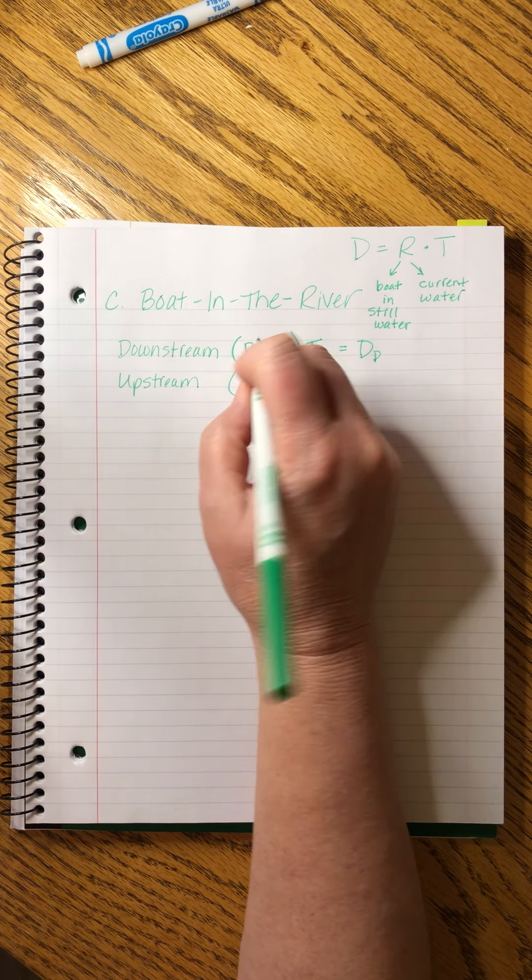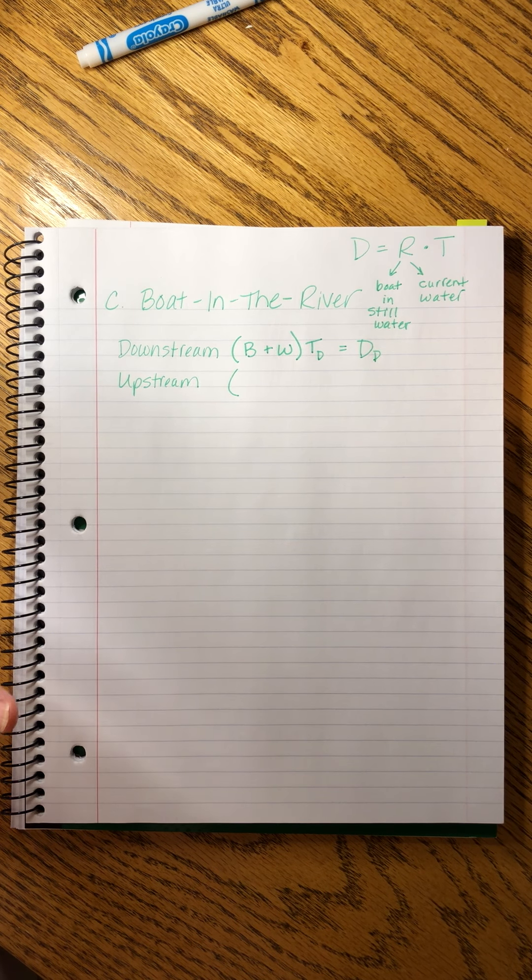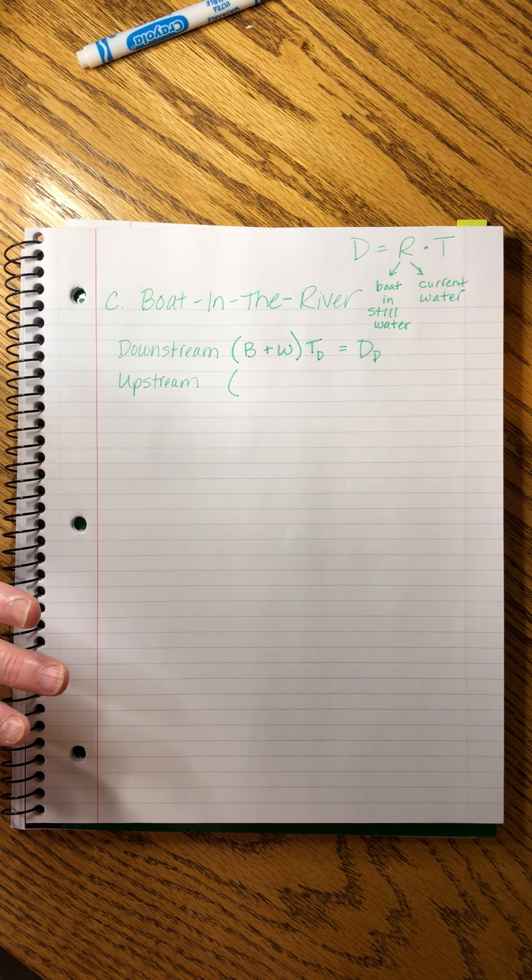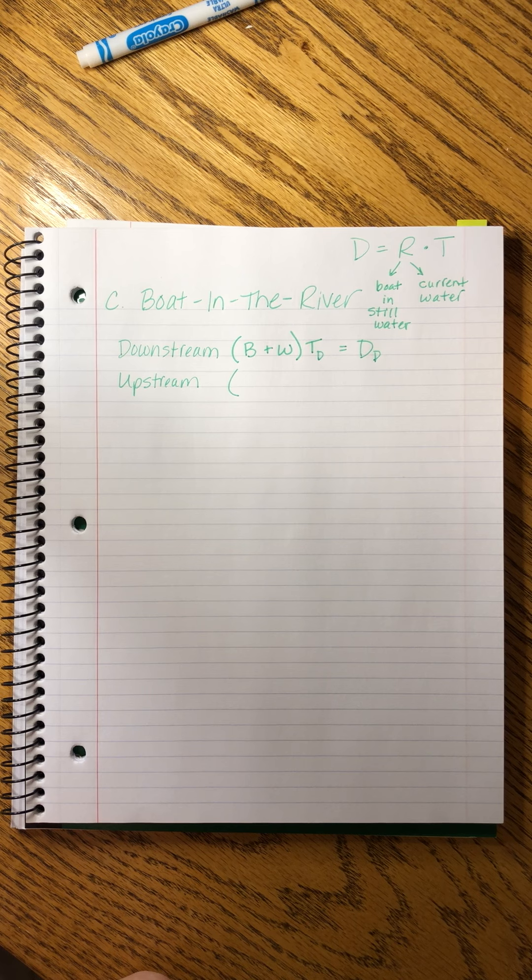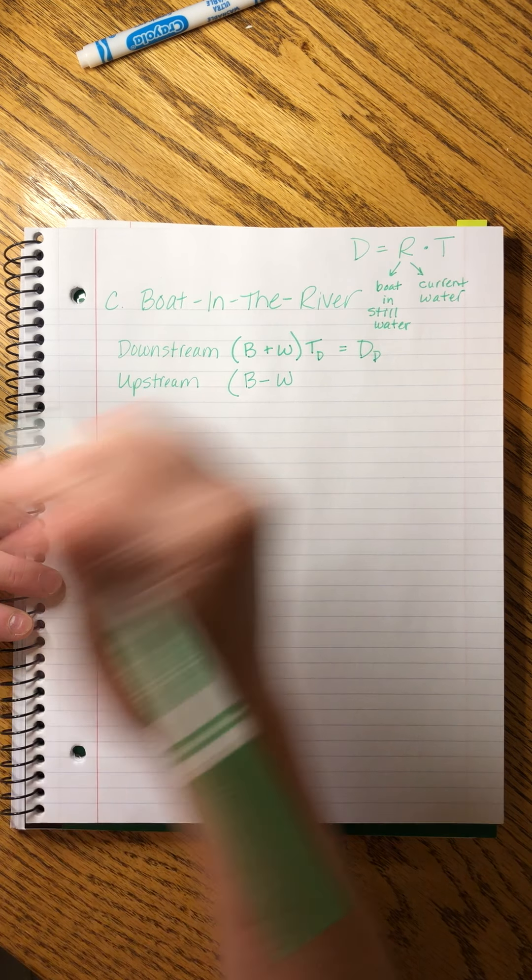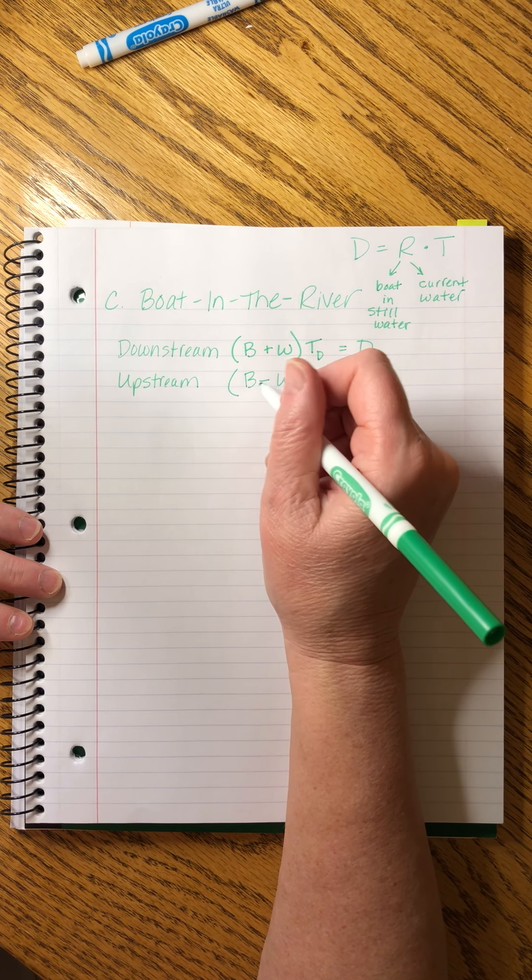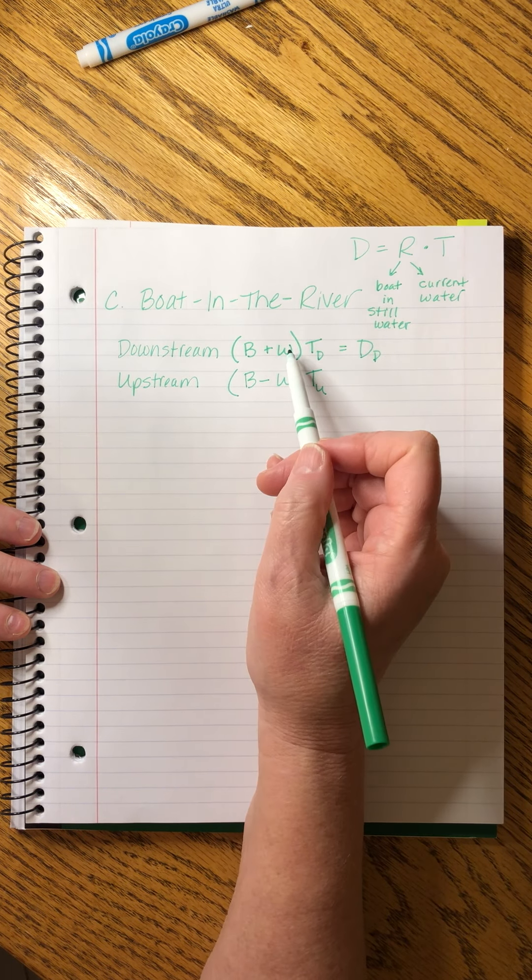So when we're going downstream, we're traveling with the speed of the current. So we add the rate of the boat plus the rate of the water and multiply it by the time downstream to get the distance downstream. And when we go upstream, and I always think of Lewis and Clark, this always reminds me of Lewis and Clark. They went to St. Louis to kick off their exploration in 1803 of the vast unknown Louisiana Purchase. Thomas Jefferson, my favorite president, sent them out. And the first thing they had to do was canoe, it makes me tired just thinking about it. They had to canoe all their gear and their whole team up the Missouri River, up the Missouri River. So they were fighting the current the whole way. So they had to be stronger than the water. Think of their bulging muscles. They had to be stronger than the water. They had to fight it. So their speed was reduced by the speed of the water.